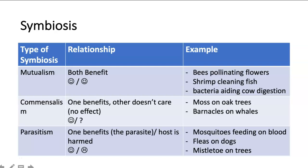With parasitism, you have one organism benefiting — we call that the parasite — whereas the host is the one being harmed. Sometimes with parasitism there can be more than just two organisms in the relationship. For example, mosquitoes feed on blood, but the malaria parasite actually uses the mosquito as a vector, or transporting agent, to move itself from one organism to another, usually humans. Fleas on dogs is another example, as well as mistletoe on trees. Unlike moss, mistletoe does actually take nutrients out of the tree and harms it, so you'll often see dead areas around where mistletoe is found in trees.